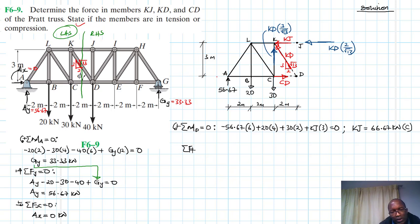Then let's apply the summation of forces in the Y direction. We have 56.67 minus 20, minus 30, plus KD three over root of 13 equal to zero. So, therefore KD is just going to be equal to 56.67 minus 20 minus 30, divided by 3 root of 13. So this gives us minus 8 kilonewtons. So if we send the opposite direction, it means the direction that we initially assumed supposed to be in the opposite direction, which is tension.